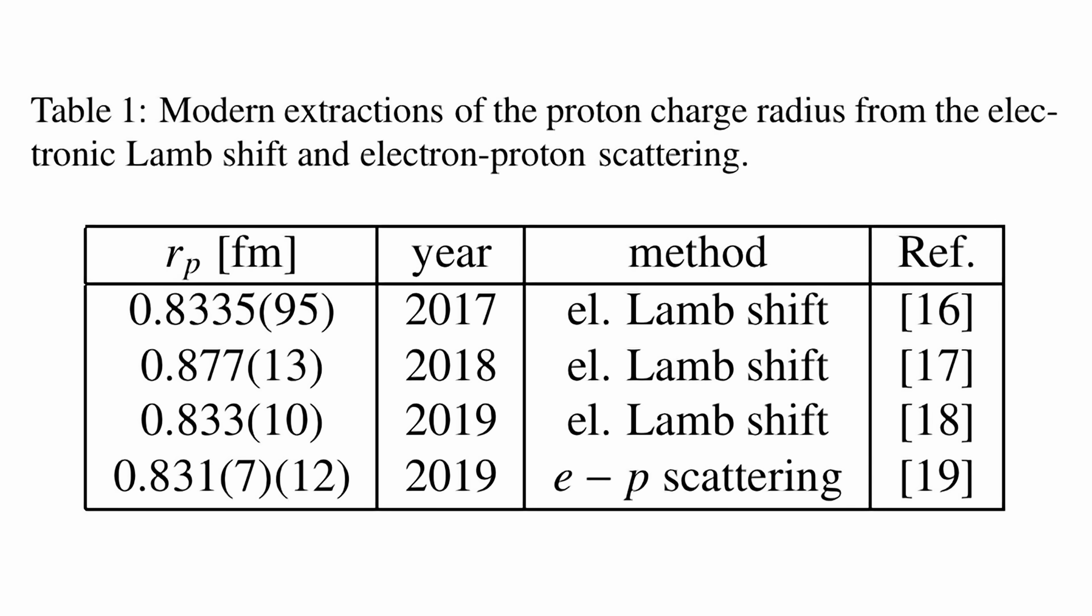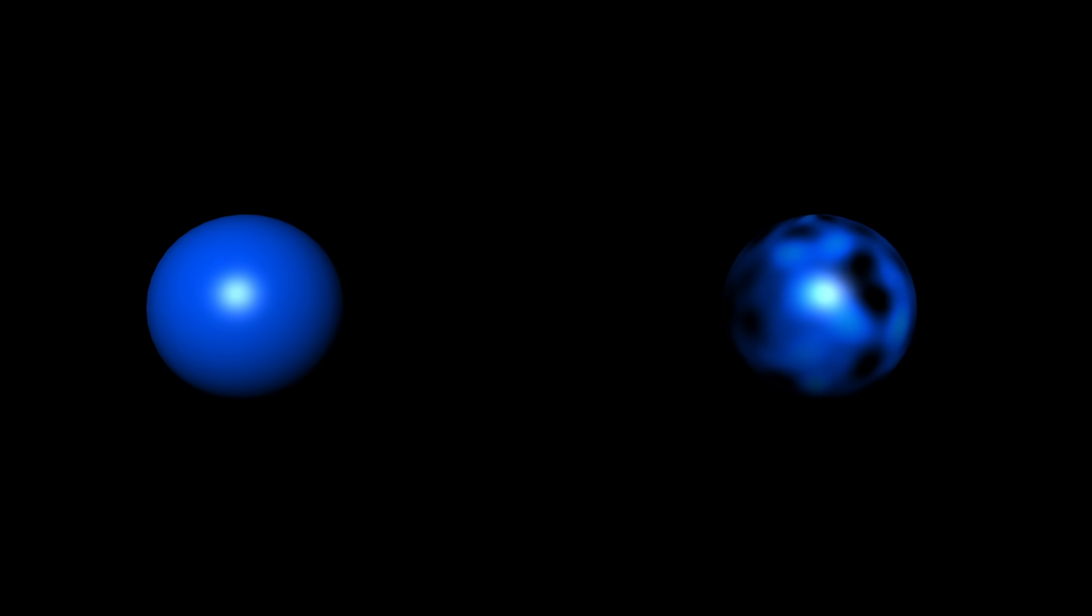Instead, different methods continue to give conflicting results, forcing physicists to reconsider fundamental aspects of proton structure. One possibility is that the proton's charge distribution is not uniform. Standard models assume that a proton is a sphere of positive charge. But if the charge is concentrated in certain regions or follows a structured pattern, different measurement techniques might probe different aspects of this structure, leading to varying results.